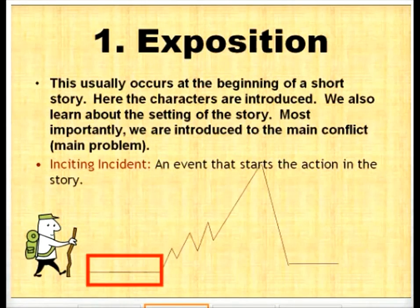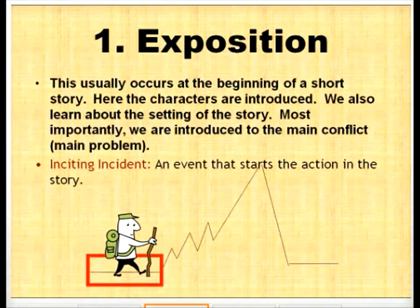The first part of the plot diagram is the exposition. This usually occurs at the beginning of a story. Here the characters are introduced as well as the setting. Most importantly, we're introduced to the main conflict or problem that the characters will face. The inciting incident also occurs during the exposition. It's the event that starts the action in the story.